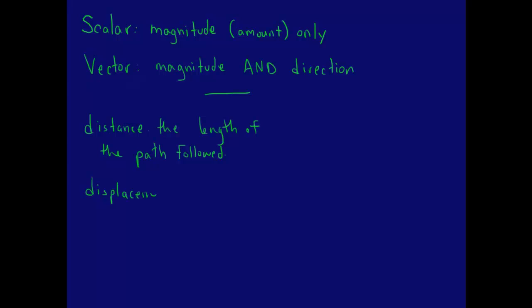Distance is a scalar. It is the length of the path traveled. Displacement is a vector. It is the length of a straight line from the initial position to the final position.